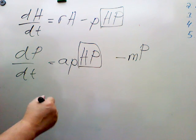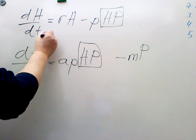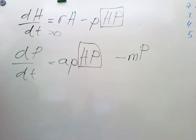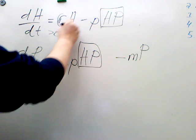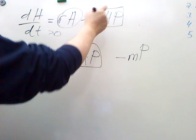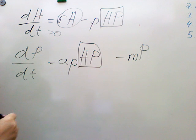So we begin in the growth phase where dH/dt is greater than zero. Positive growth, which means that this term has to be numerically bigger than the second term. So big number minus a small number is still a positive number. So H continues to grow. The prey are going to continue to grow. Their number is going to increase.